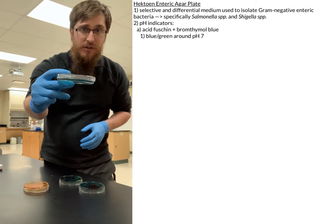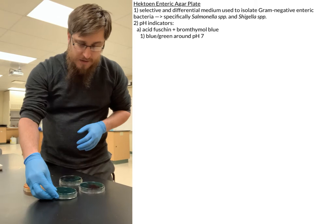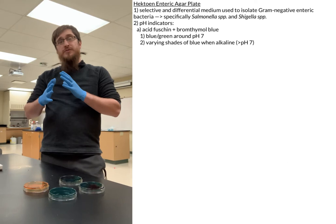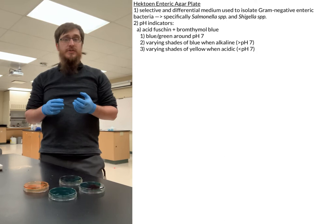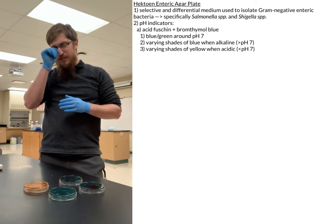If we increase the pH or make it more alkaline, the plate will normally turn more and more blue. Whereas if we make it more acidic or decrease the pH, it starts becoming more and more yellow — just varying shades as we move up or down on our pH scale.